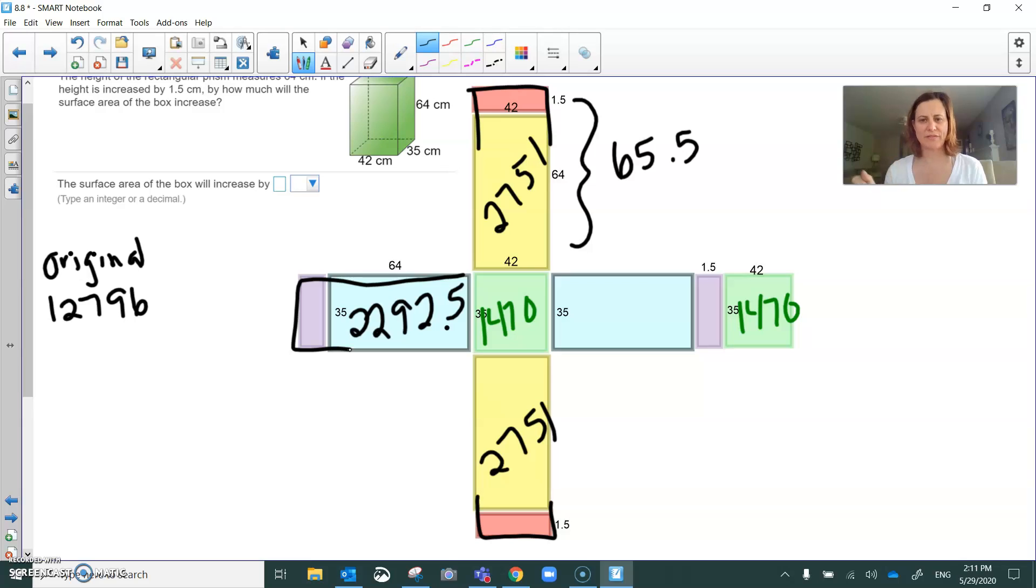Okay, so we've got the two yellow sides are 2751, two of them. The two blue sides are 2292. There's two of them. The green sides are 1470 and there's two of them. Okay, so let's add those up.